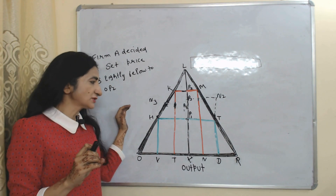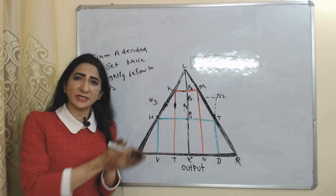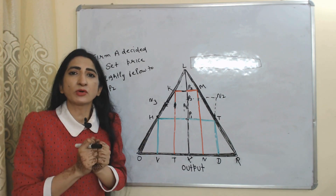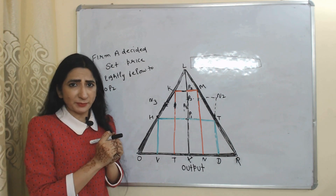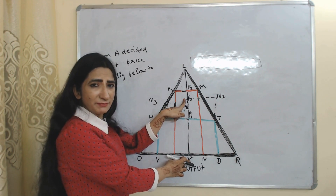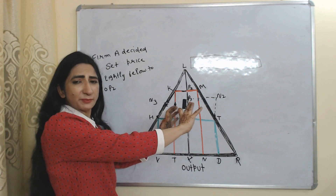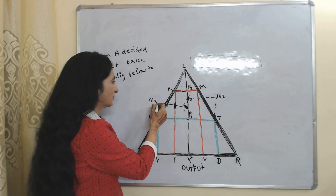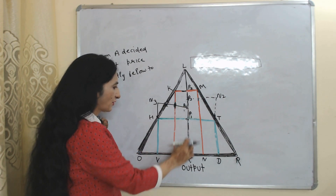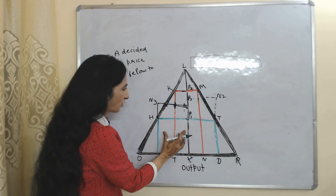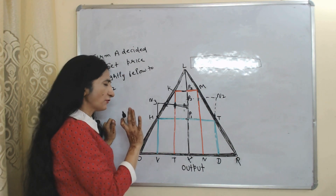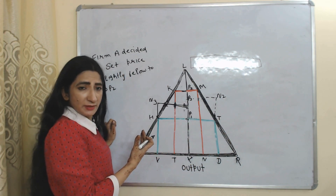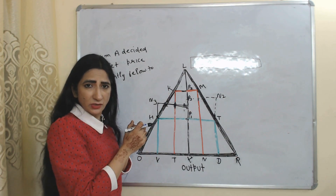But this situation gives loss to B, because customers of B are going to A. Firm B is also in the market to do business and wants to earn profit, so B will also react. Firm B decided to set its product price slightly below xp3, assuming A will not change its price. Now price of B is xp4, and at this price B is earning profit equal to v, price b, 3d and 3p4 — this is the profit of B after reducing price. But now this is giving loss to A, because customers of A are going to B.